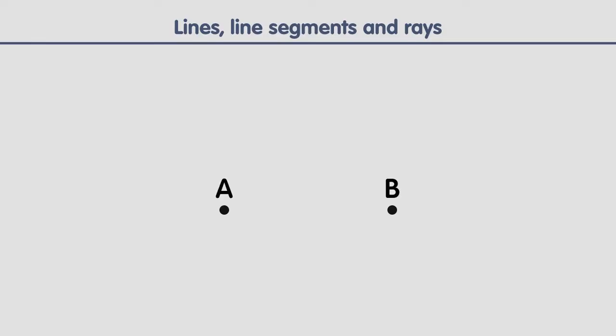Imagine that we draw two points. Let's call them point A and point B. If we join these two points following a straight path from A to B, we create something called a line segment. We name it line segment A-B. A line segment has a beginning and an end — it starts at one point and it ends at another.